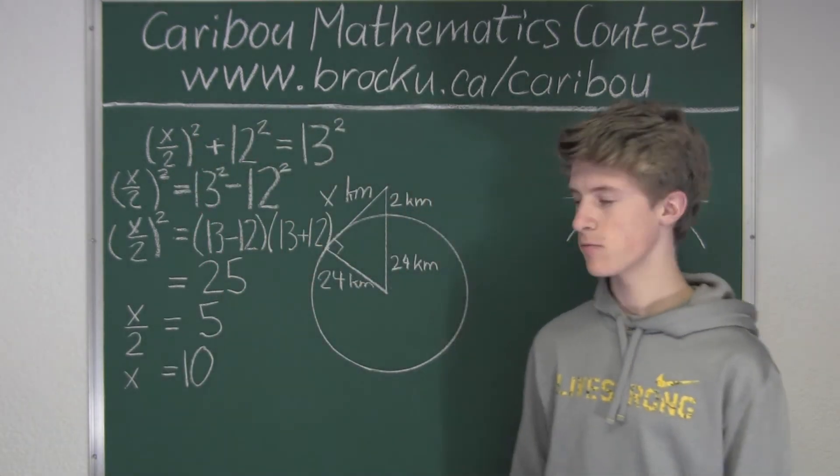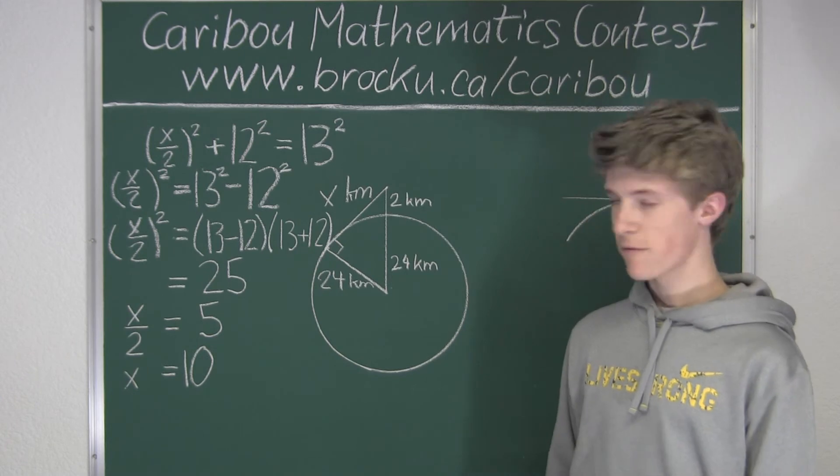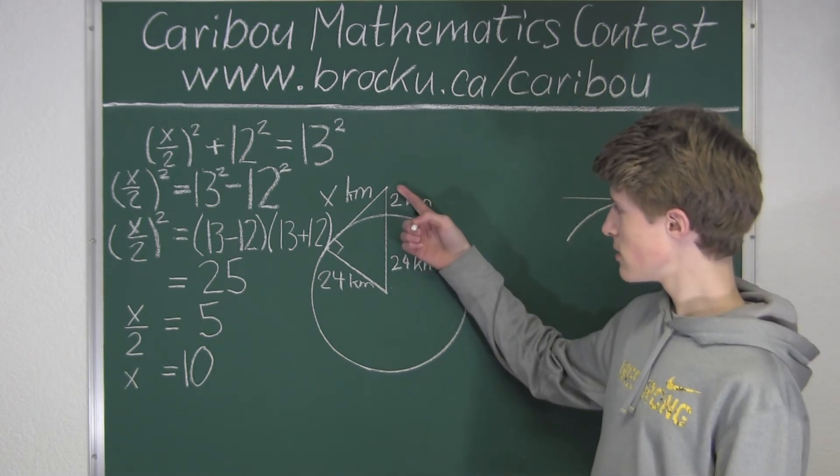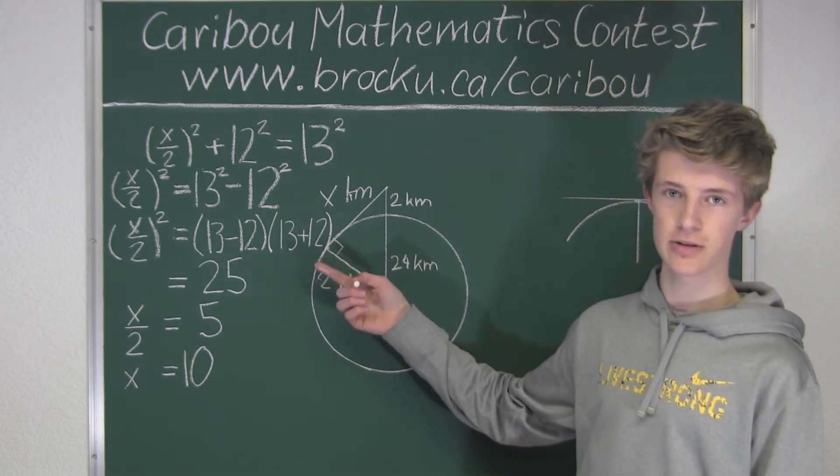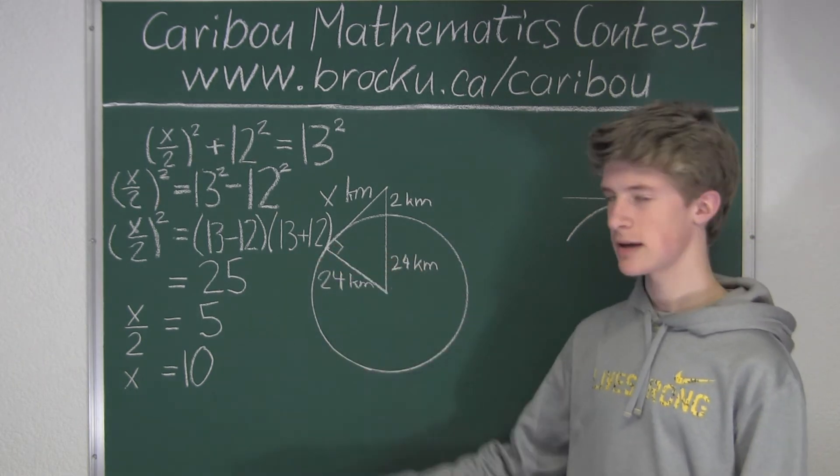Okay, so therefore, we know that the furthest distance from the top of the tower which you can see until the furthest point on the surface of the planet must be 10 kilometers.